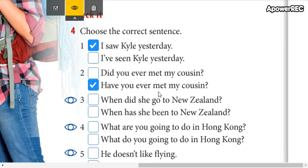Number three: 'When did she go to New Zealand?' or 'When has she been to New Zealand?' The correct is 'When did she go?' because I'm referring to a specific place. That's why I'm asking 'when.'